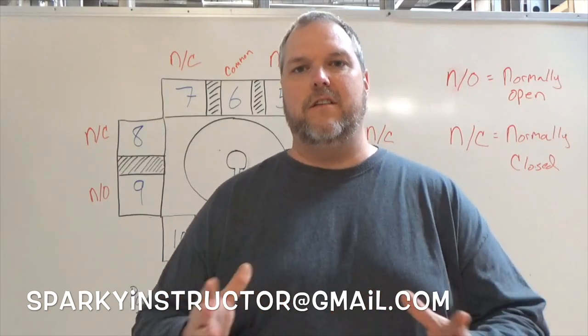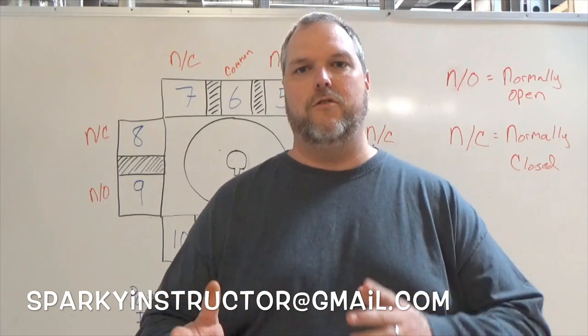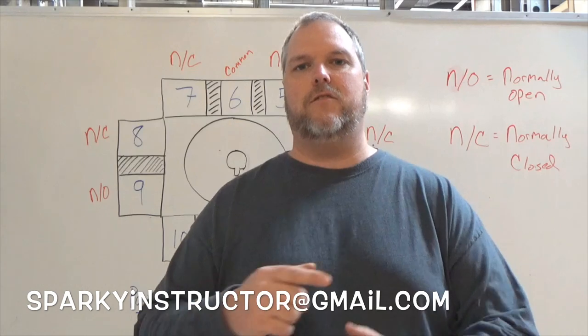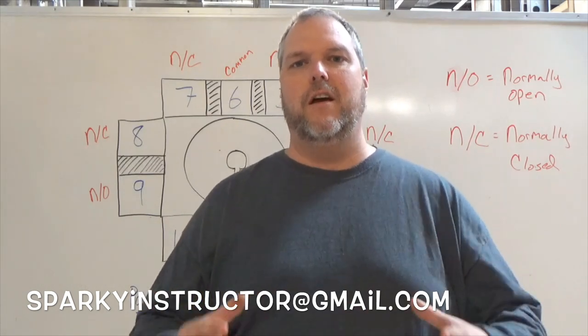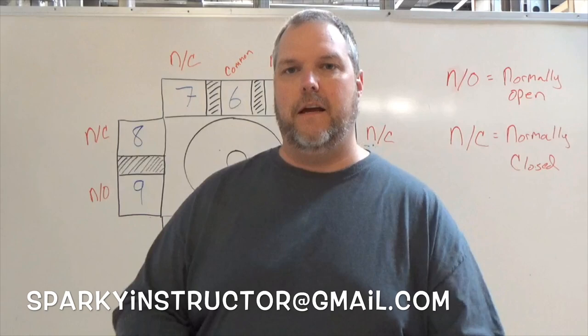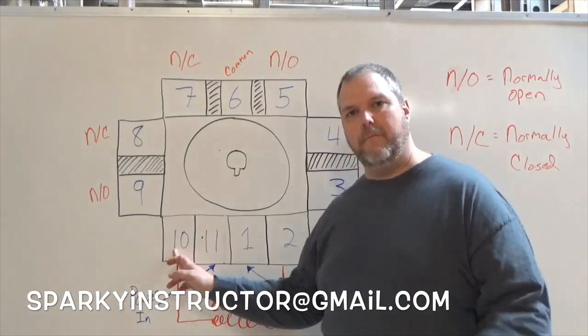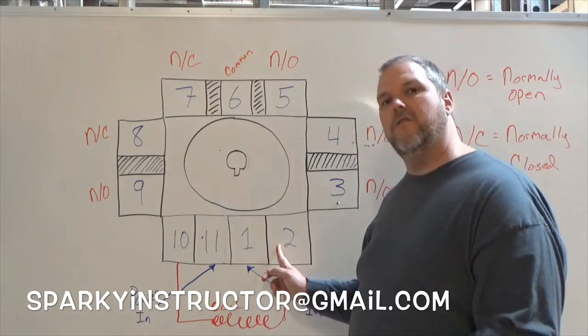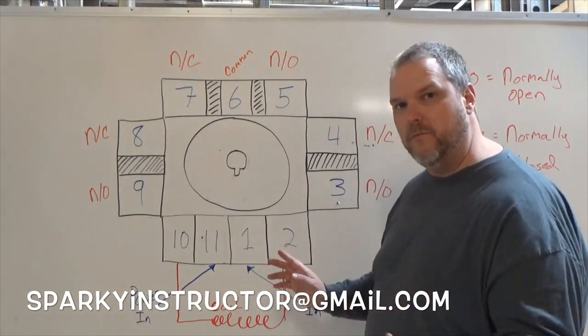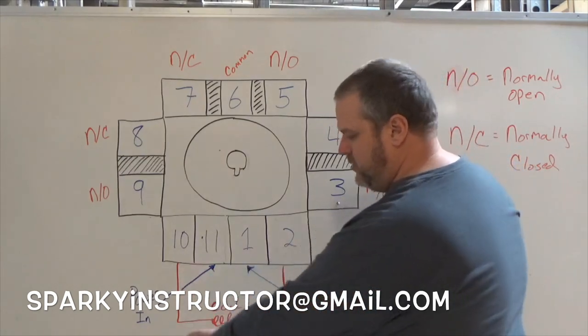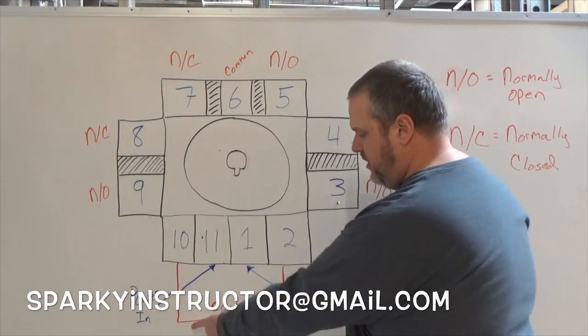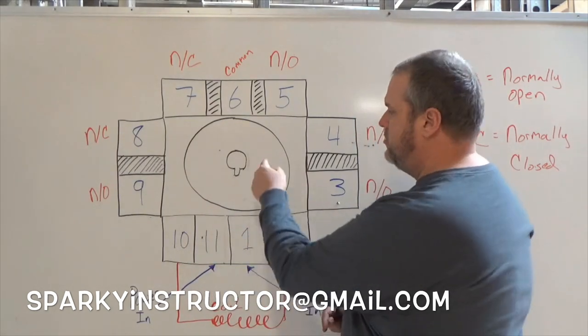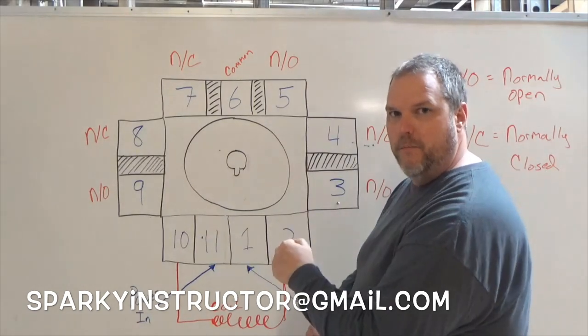These are 120 volt relays, so you can use the neutral or you can use the hot conductor, switch leg, whatever you're using to feed either 2 or 10. Meaning 2 can get my hot conductor or my neutral, but it can't do both. 10 can also get my hot conductor or my neutral, but again it can't do both. My drawing here is basically showing us that we have the coil. This is the coil, so this is what's going to energize and pull in to allow this pin to actually operate properly.